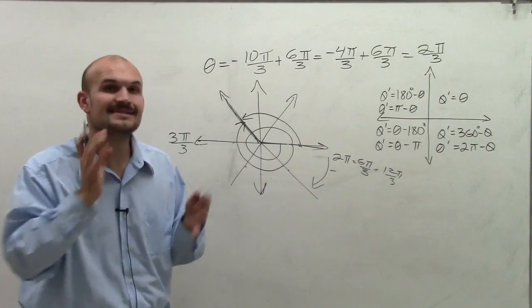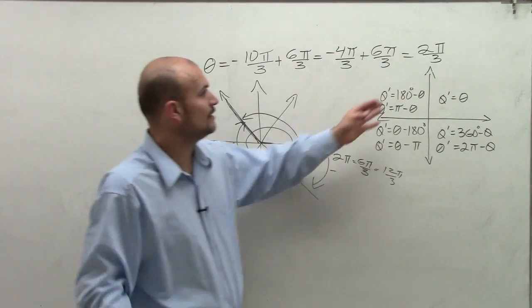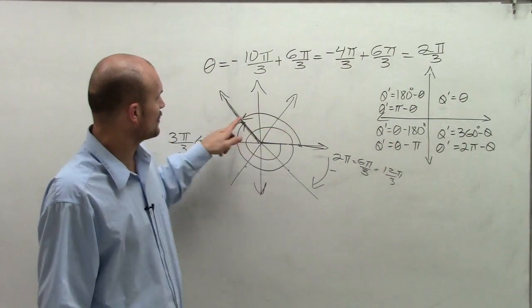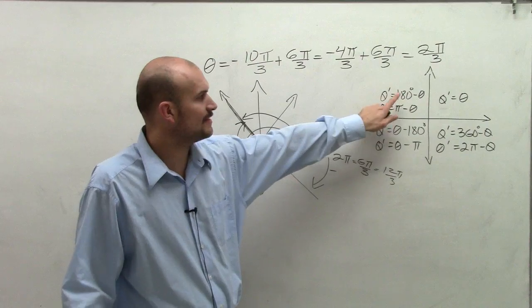However, it's now a side that's positive and less than 2 pi. So now I notice that my terminal side is in the second quadrant.